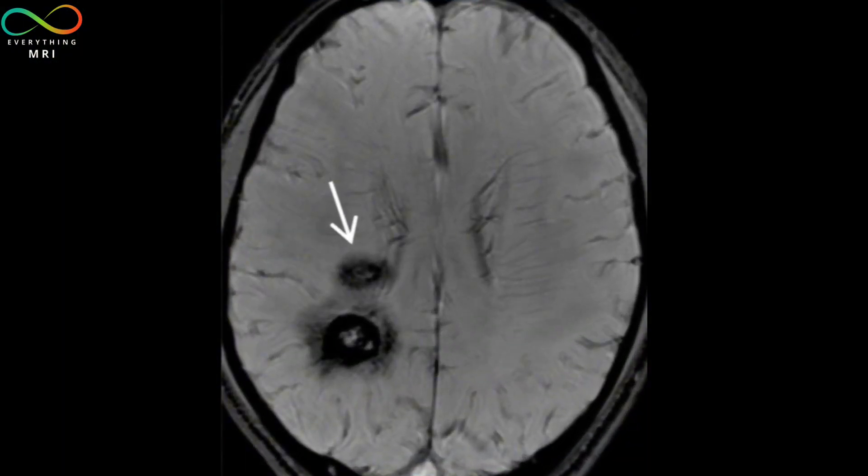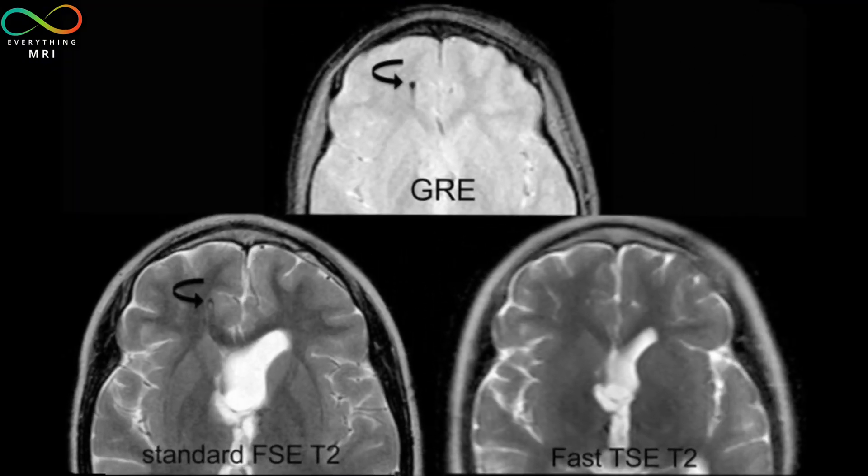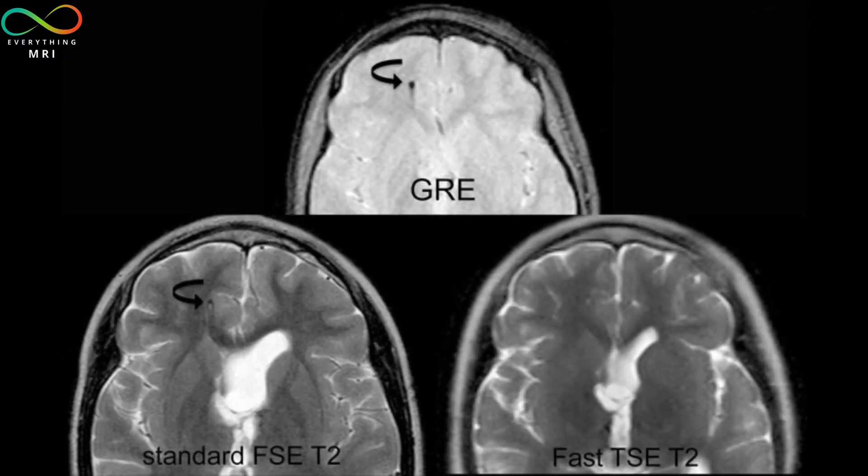T2 star includes both the true T2 relaxation but also additional dephasing from local field variations. As a result, T2 star is always shorter than the true T2, and the signal in gradient echo sequences decays more quickly compared to spin echo imaging. From an image contrast perspective, this is very important. Because gradient echo sequences are highly sensitive to susceptibility and T2 star effects, T2-star-weighted gradient echo and their peculiar contrast are routinely utilized to detect microbleeds, calcifications, or to better visualize venous structures.